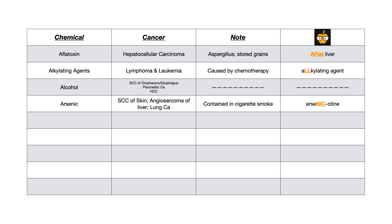Now we're going to talk about arsenic. Arsenic causes squamous cell carcinoma of the skin, angiosarcoma of the liver, and lung carcinoma. You should know arsenic is actually contained in cigarette smoke. The mnemonic: instead of saying 'arsenic,' say 'arsenicotene,' which cues you that arsenic is in cigarettes. The arsenic-related cancers are very closely related to the adverse effects of cigarette smoke — which is a great transition to our next chemical.